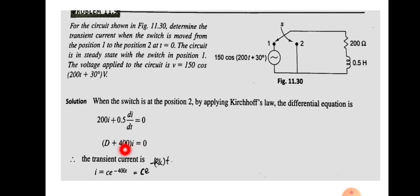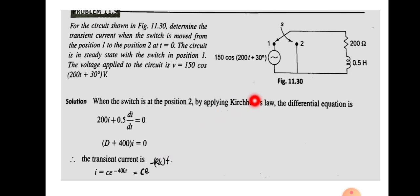We are asked to find the transient current, which equals the complementary function. The transient current is i = Ce^(−400t), where R is 200 and L is 0.5, so R/L = 400. This result follows from the standard analysis of RL circuits.